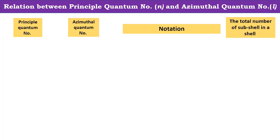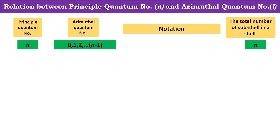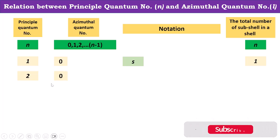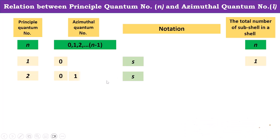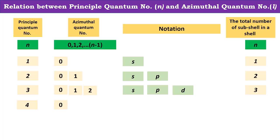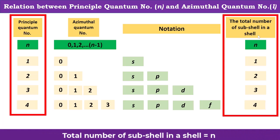Let us understand the notations for the given subshell values. For N=1, only one value is possible — L=0 — representing the S subshell. For N=2, there are two values: 0 representing S and 1 representing P. For N=3, there are three values: S, P, and D. For N=4, there are four values representing S, P, D, and F. The total number of subshells in a shell is always equal to the principal quantum number.